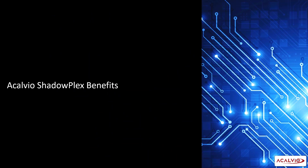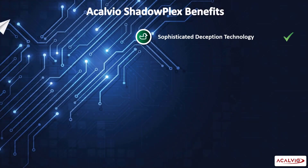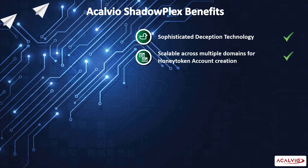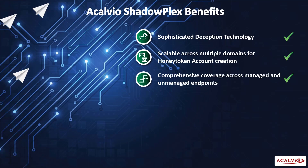Acalvio honey token accounts and honey tokens for CrowdStrike identity protection offer immense benefits to enterprises: sophisticated deceptions to strengthen the defender's toolkit against sophisticated attackers. Acalvio seamlessly scales across multiple domains for automatically blending and recommending honey token accounts. Acalvio provides comprehensive coverage for identity protection across managed and unmanaged endpoints.